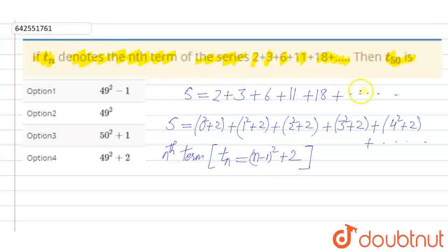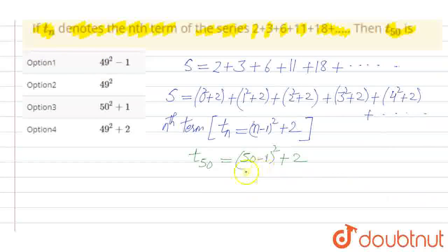Now we have to find T50, the 50th term. T50 would be equal to 50 minus 1 whole squared plus 2. This becomes 49 squared plus 2. So 49 squared plus 2 is the answer.